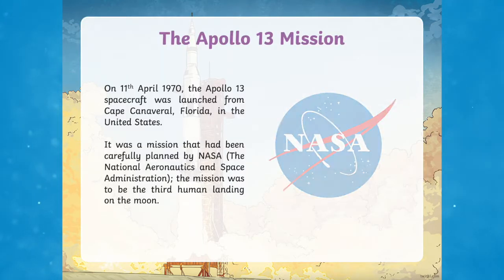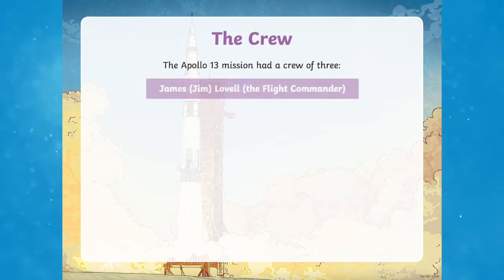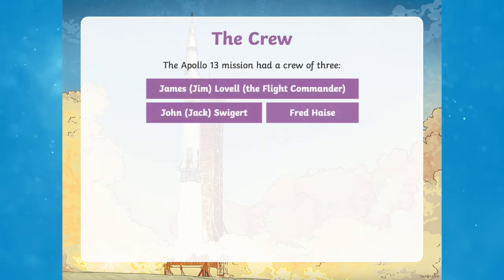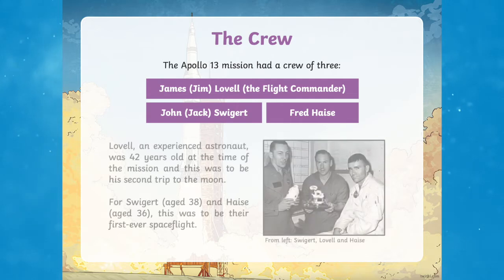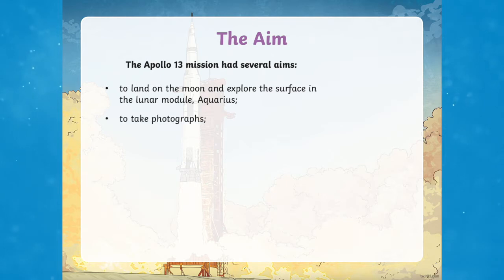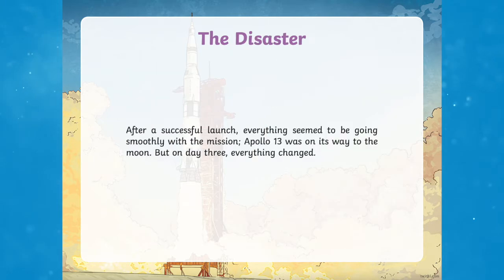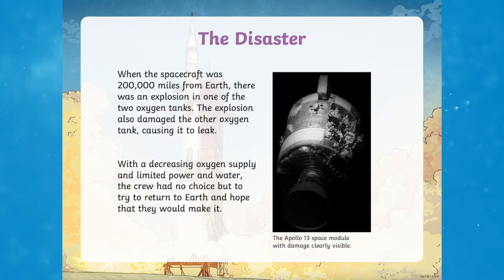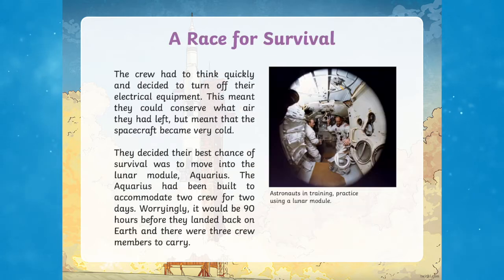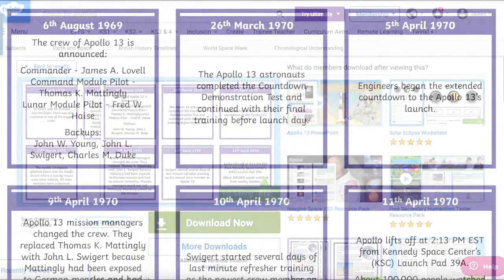But what about an Apollo mission with an extraordinary story from when a mission didn't go to plan? Find out how the astronauts of the Apollo 13 mission survived a disaster in space. This informative PowerPoint teaches pupils about the original aims of the mission and its abrupt end, which then led to a fight to bring the crew back to Earth safely after their oxygen tank exploded.